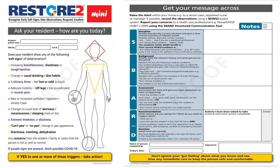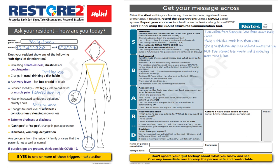Let's put all this together using Molly as our example to populate the Restore2Mini tool. This morning we asked Molly how she was feeling today. We found she has reduced mobility compared to normal, appears to be drinking a lot less, and is sleeping much more. This has prompted our concern, so now we're going to fill out the SBARD. For Situation: 'I'm calling from Sunnyside Care Home about Molly Jones. Molly is drinking much less than usual, she's withdrawn and has reduced concentration, and she's become less mobile and is spending more time in bed.'